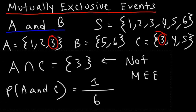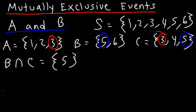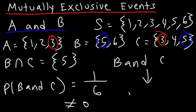What about events B and C? Are they mutually exclusive? B and C share the outcome five, so that's the intersection of these two events. The probability of getting B and C is one over six. So because it does not equal zero, B and C are not mutually exclusive events. To determine if two events are mutually exclusive, find the probability of getting those two events together. If it's zero, they are mutually exclusive. If it's anything but zero, they are not mutually exclusive.